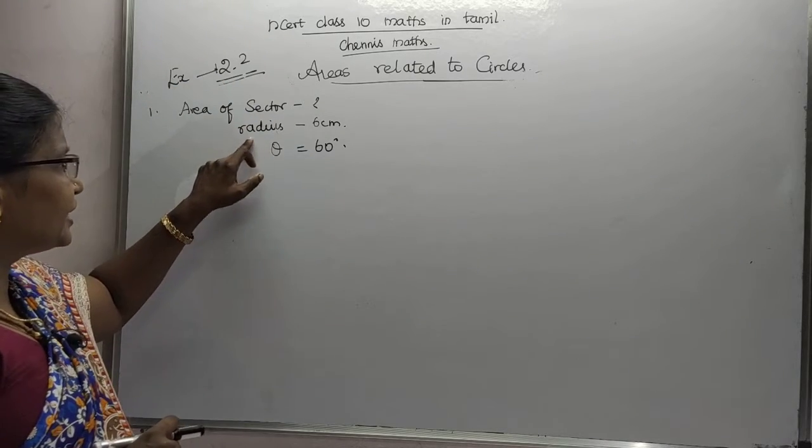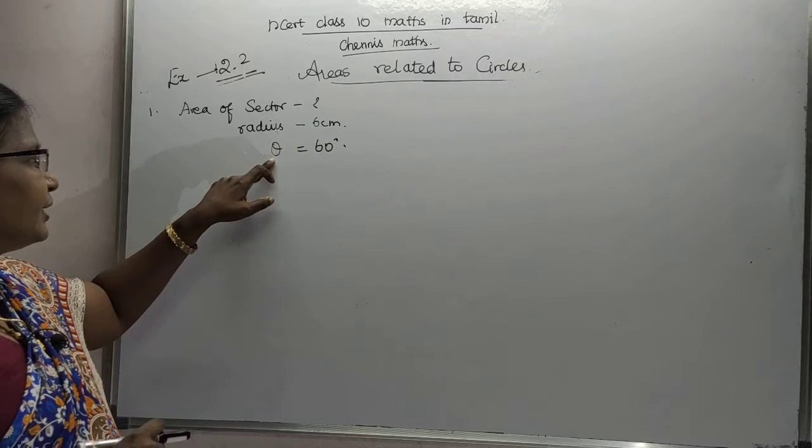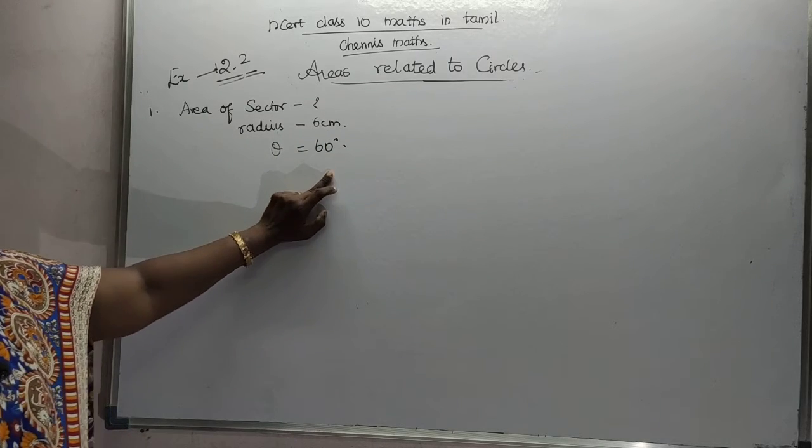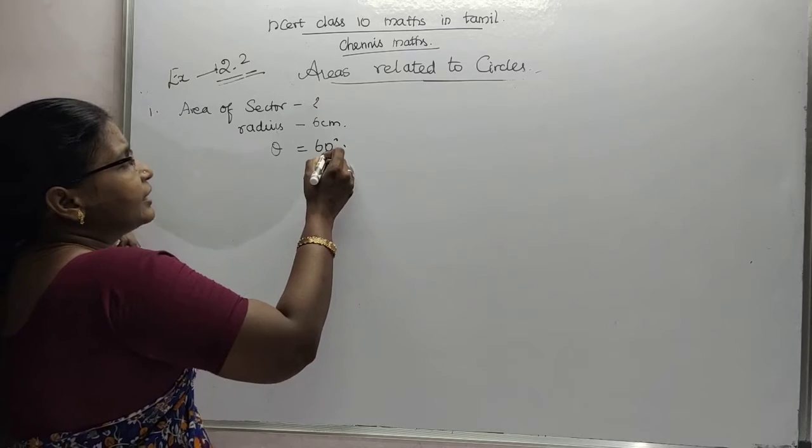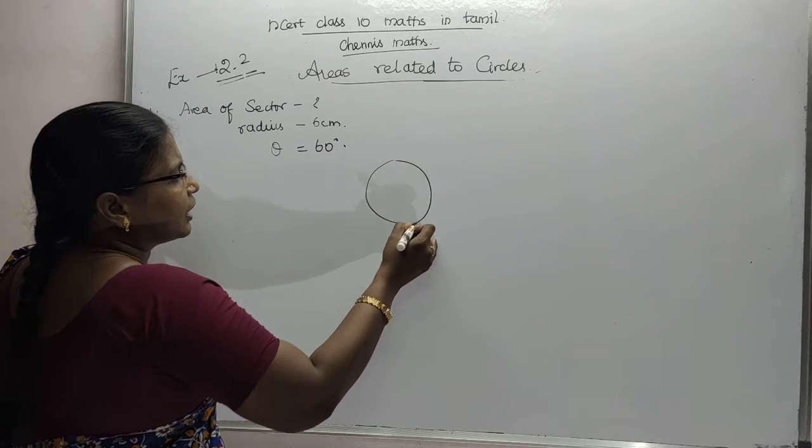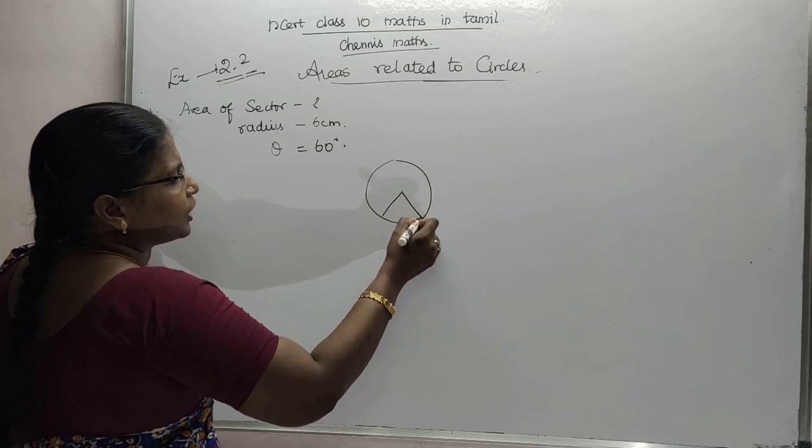Radius is given as 6 centimeters and theta is given as, if the angle of the sector is given as theta and it is given as 60 degrees.